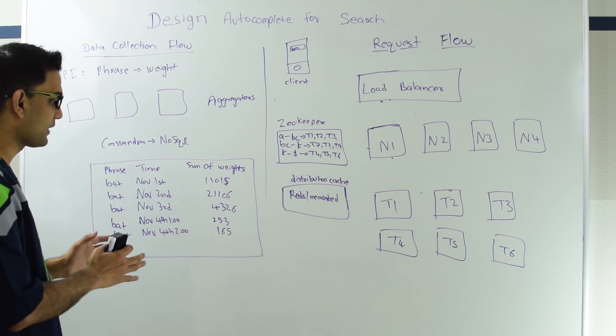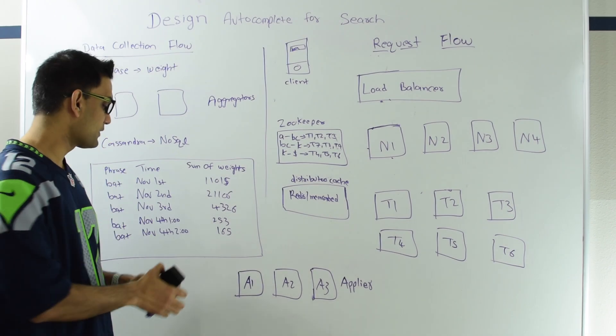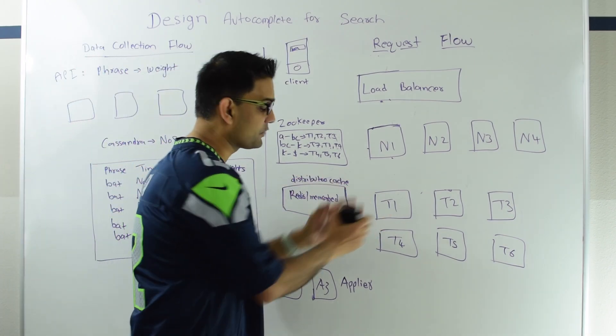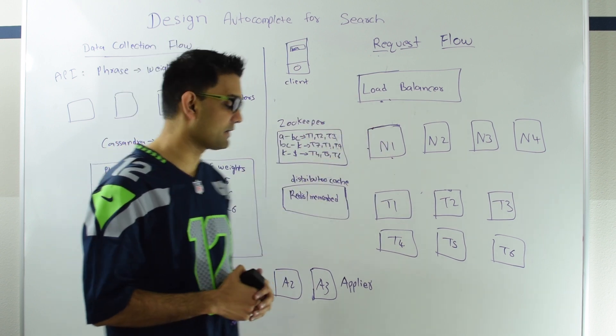Once we have collected this data for millions and tens of millions of phrases based on their time and sum of weights, we're going to have an applier and he's going to apply that into our trie. Next, let's see how.